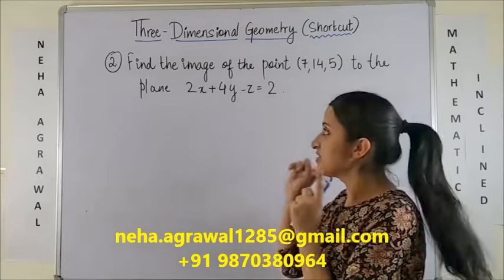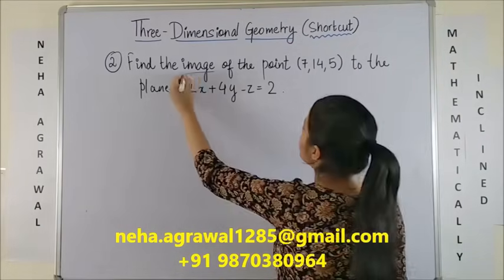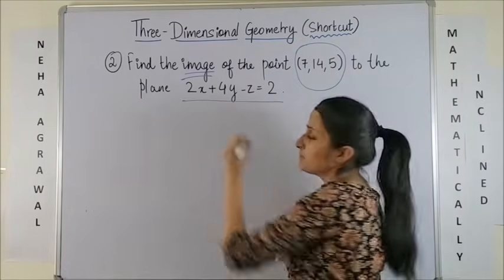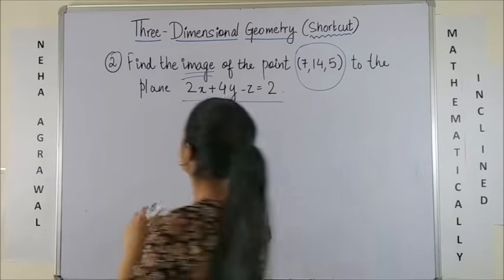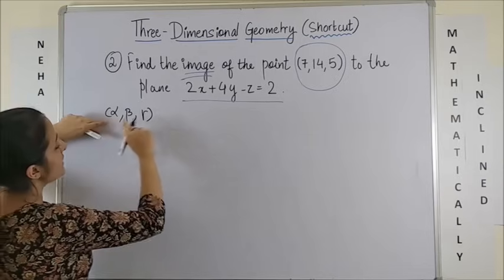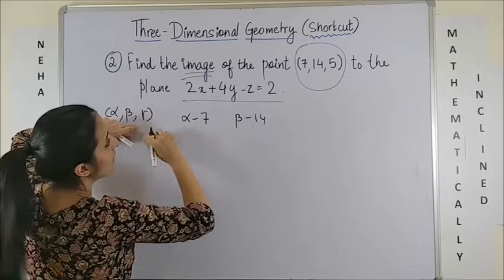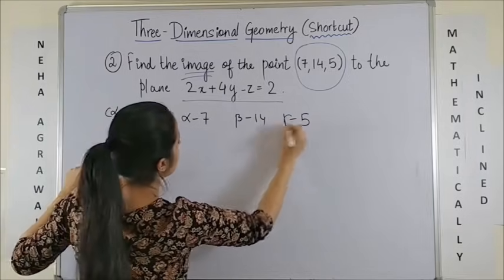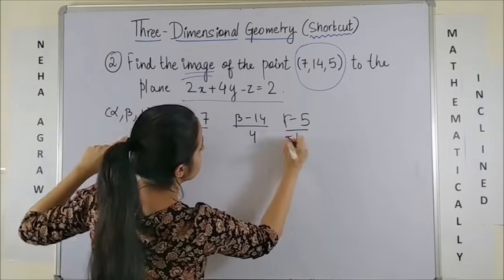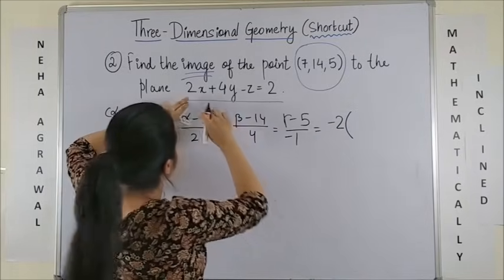Let's discuss the procedure one more time with a new question. Find the image of the point (7, 14, 5) in the given plane. Once again, assuming the image to be alpha, beta, gamma, we subtract the coordinates: alpha minus 7, beta minus 14, gamma minus 5 over the coefficients of x, y, z — so 2, 4, minus 1 — equals minus 2 times...